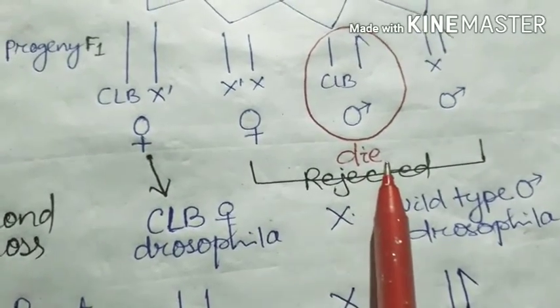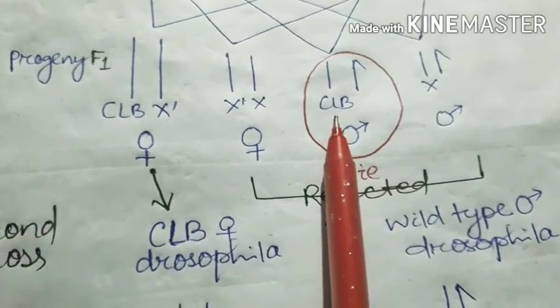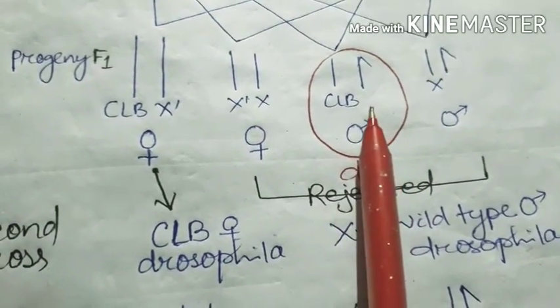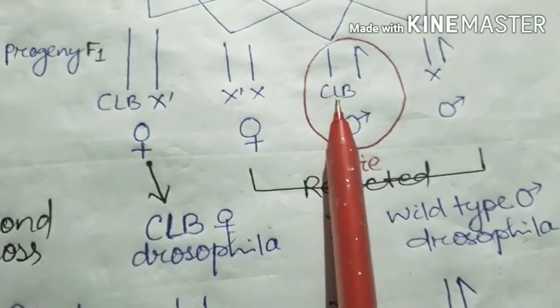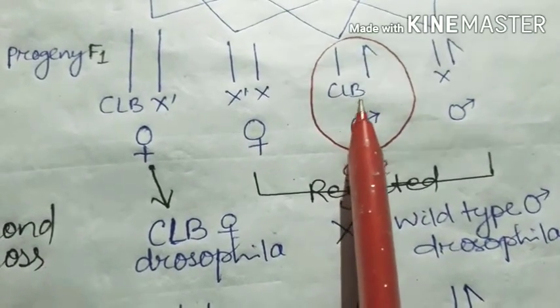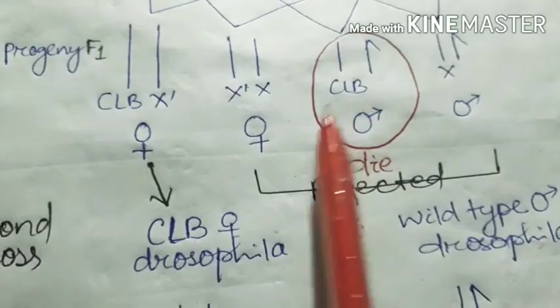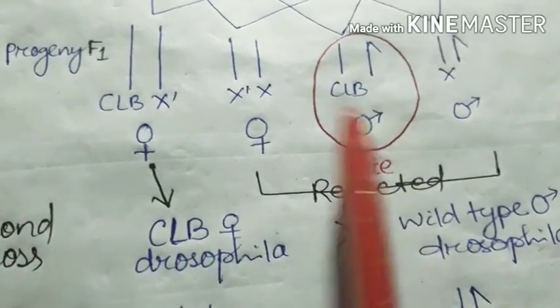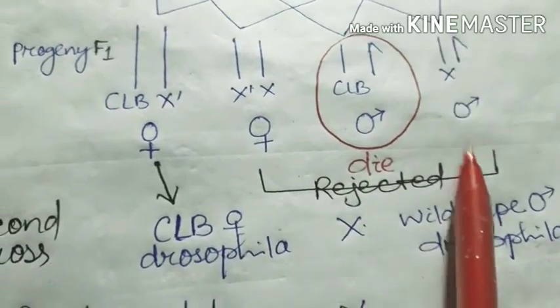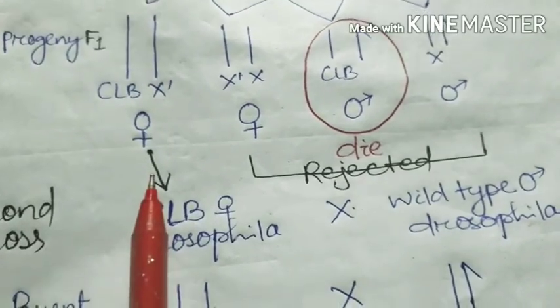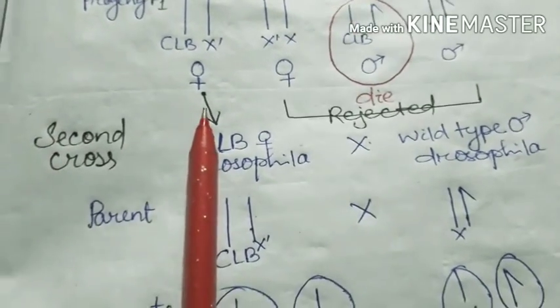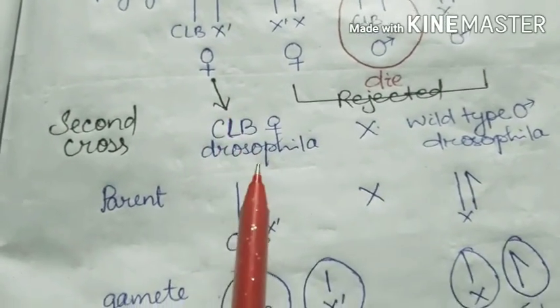From those four progenies, three are rejected because CLB male died. The CLB male has the CLB chromosome and the Y chromosome, producing hemizygosity, so this one died and these two are rejected.